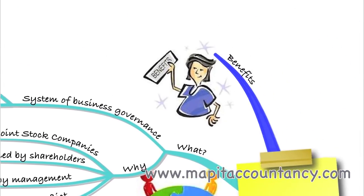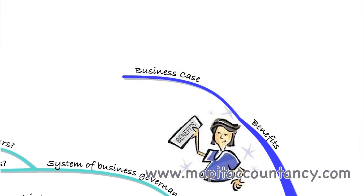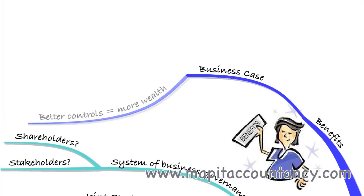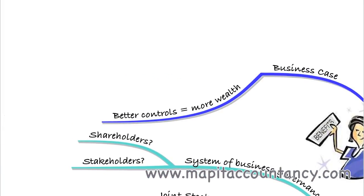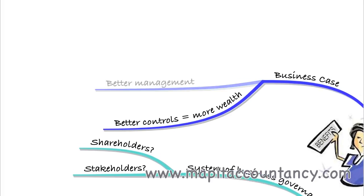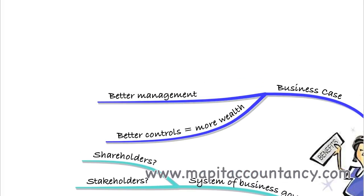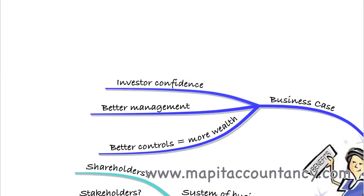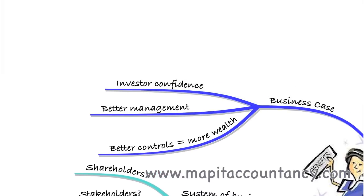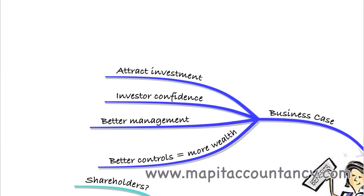The benefits of having governance: first of all, there's a business case to be made for it. It will attract investment through better controls, which will lead to more wealth in the organisation. Better controls mean there's less fraud and error, and that should lead to more shareholder wealth. There should be better management because you adhere to the corporate governance codes, and that should give investors confidence to invest with you, attracting more investors. That's the business case for having strong governance within an organisation.